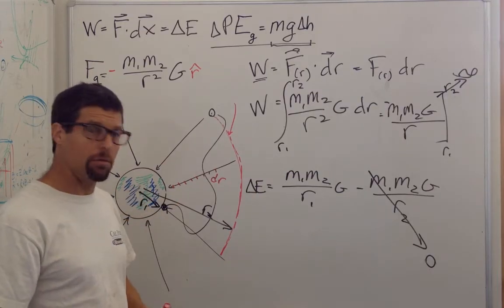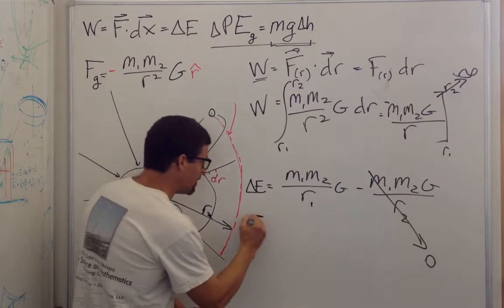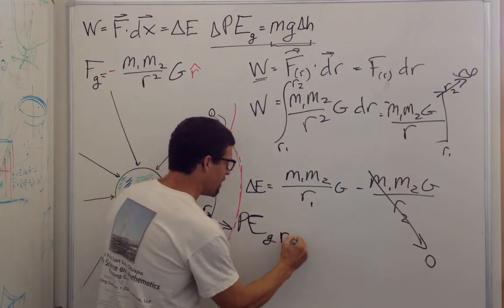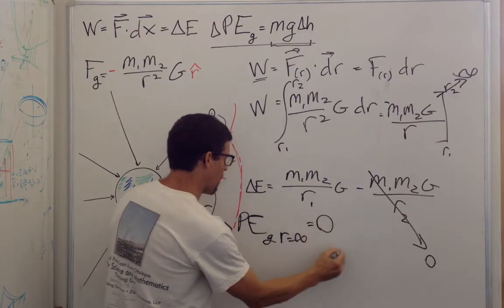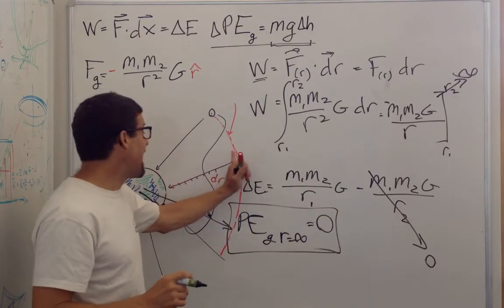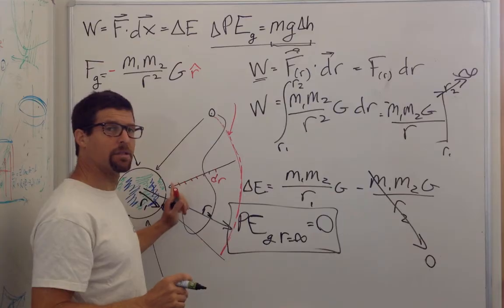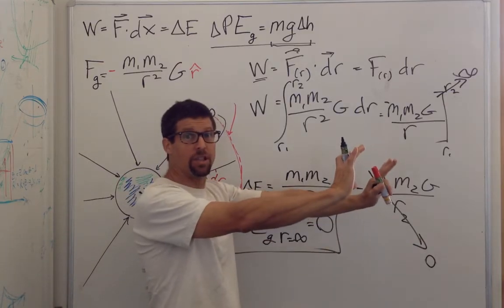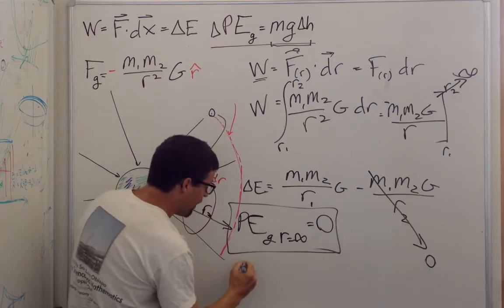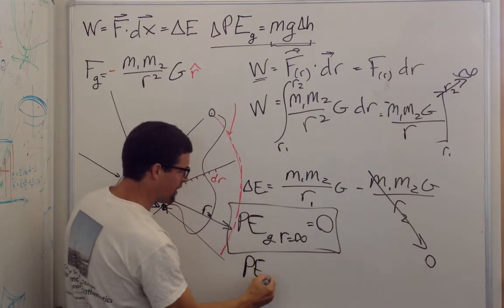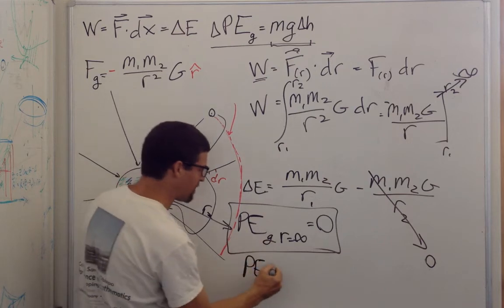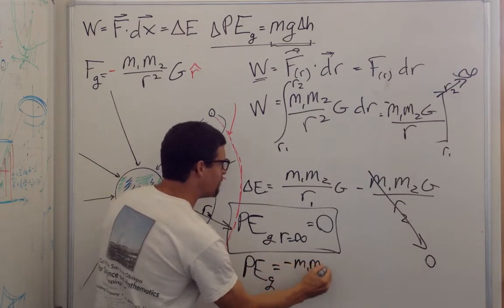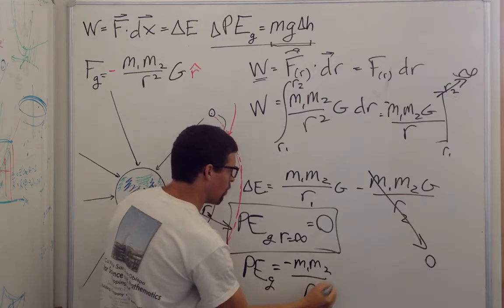Or what energy would it have way down in here? And actually what we do is we say that the energy, the potential energy of gravity at infinity is equal to zero. So that means the energy at any smaller radius is going to be negative because we have to do work to get us to zero. So we define the potential energy, not the change of potential energy, but the total gravitational potential energy is equal to negative M1 M2 over R1 G.